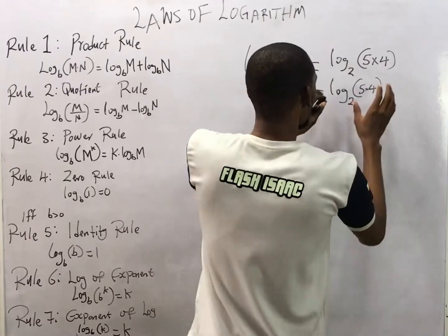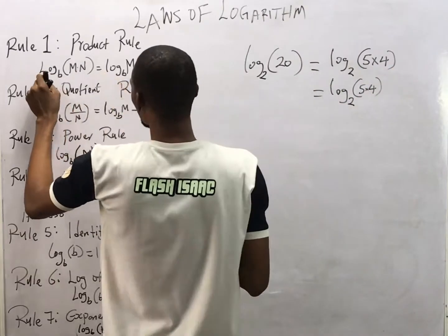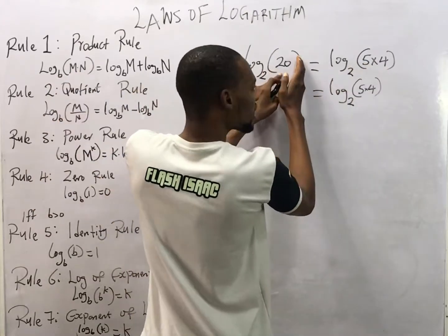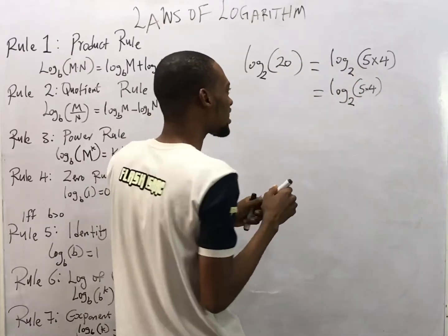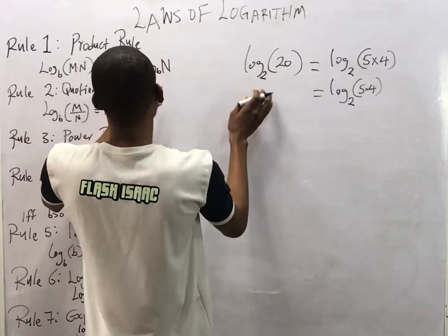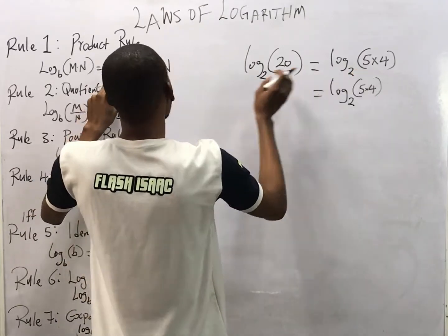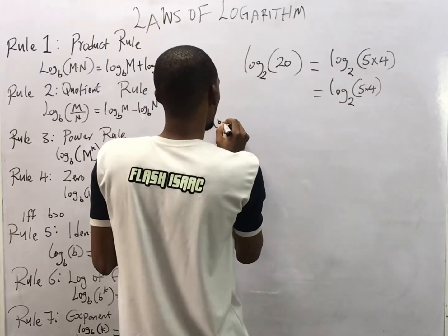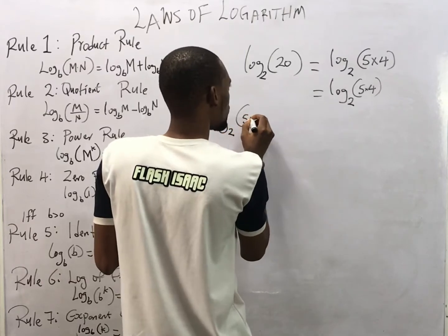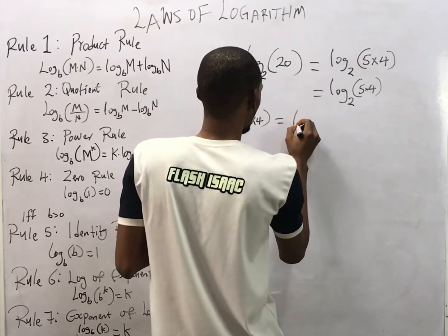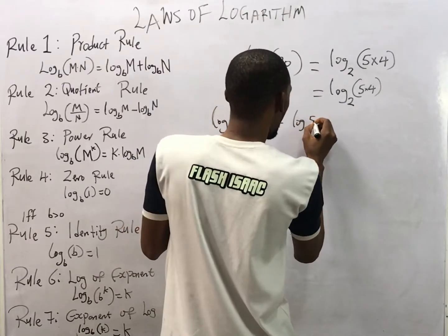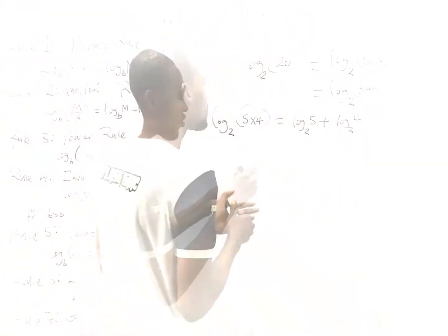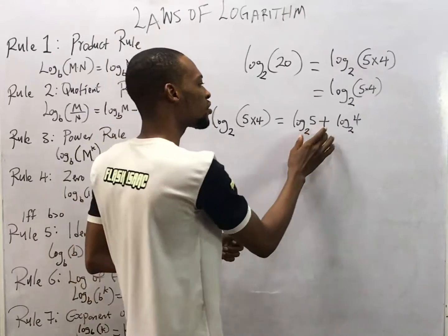This implies that when you have log_b(m × n) — for example, 5 times 4 because we can break 20 down into 5 times 4 — this is the same thing as taking each factor separately with the same base and adding them. So log base 2 of (5 × 4) equals log base 2 of 5 plus log base 2 of 4. In summary, multiplication inside the log becomes addition.